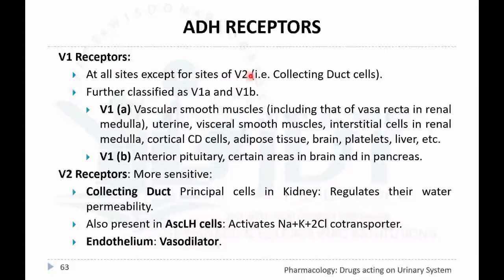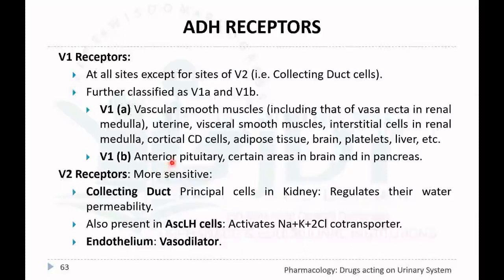V1 receptors are present at all sites except where V2 receptors are found. They are further classified into V1a and V1b. V1a receptors are present in vascular smooth muscle including different blood vessels, vasa recta in the renal medulla, uterine and visceral smooth muscle, interstitial cells in renal medulla, cortical collecting duct cells, adipose tissue, brain, platelets, and liver. V1b receptors are present in the anterior pituitary, certain brain areas, and the pancreas.